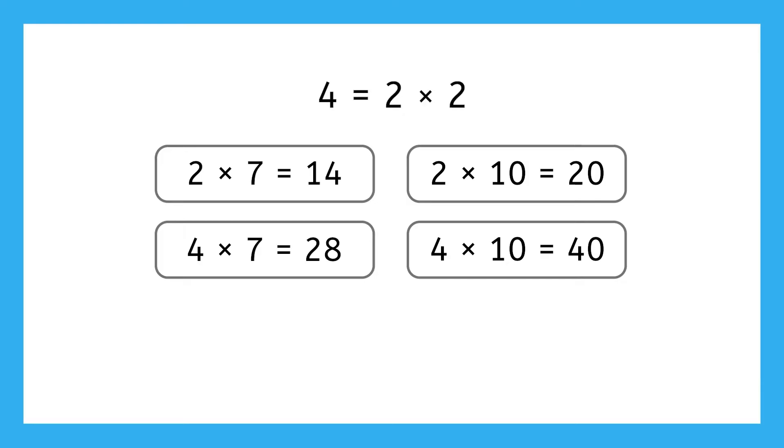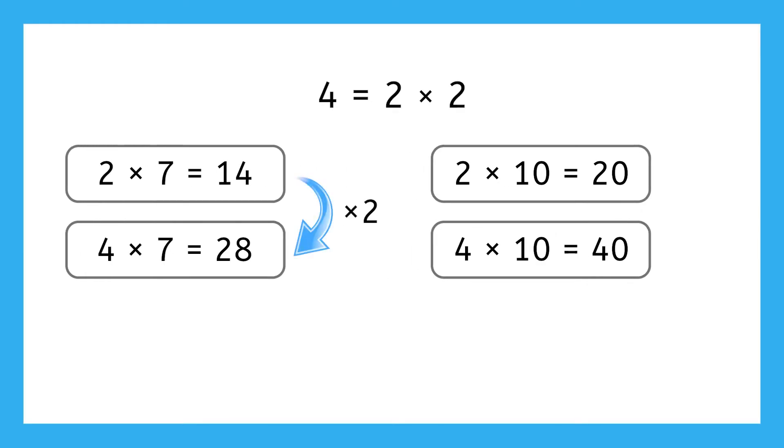Since four is twice as much as two, the answers we get when multiplying by four are twice as much as they are when multiplying by two. Another way to say that is that the amounts are doubled. 28 is twice as much as, or double, 14. And 40 is twice as much as, or double, 20.